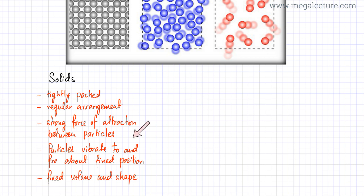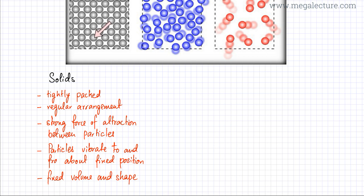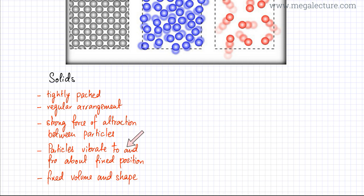Another thing about solid state is that particles vibrate to and fro about a fixed position. When particles gain energy, a particle cannot move much because it's strongly held by all the other particles attracting it strongly. So what this particle can do is vibrate about its fixed position, but it can't really move much. Whenever particles gain energy in solid state, they vibrate to and fro about their fixed position.